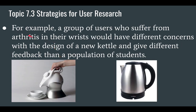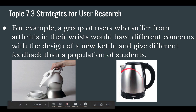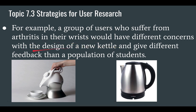Here's an example the IB gives: if you have a group of users who suffer from arthritis — basically a disease of the joints that makes things hard to move or lift — if you have arthritis in your wrist, you'd have a difficult time picking up something heavy like this kettle. Somebody with arthritis in their wrist would be a different concern with the design of a new kettle and give different feedback than a population of students who would not have arthritis.